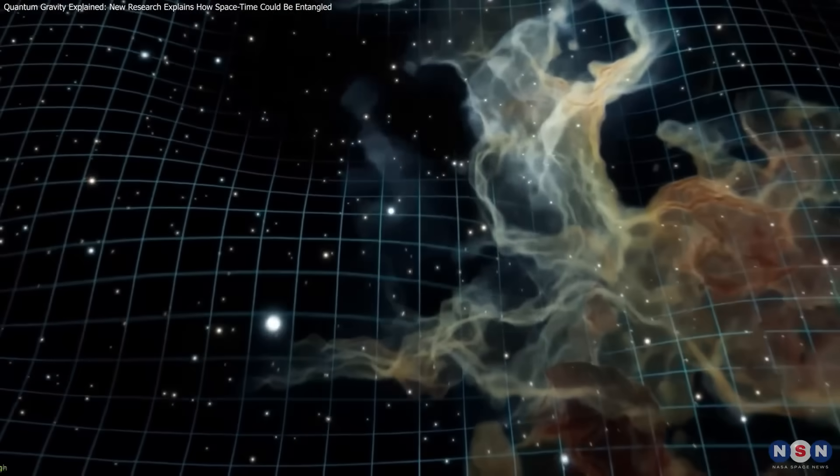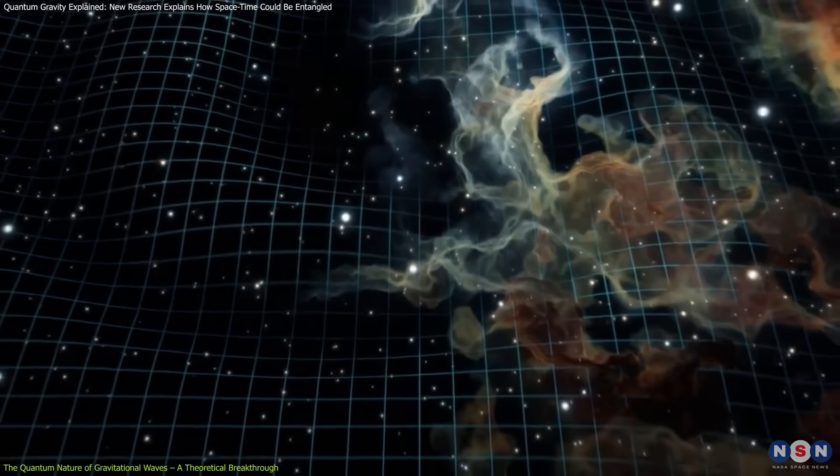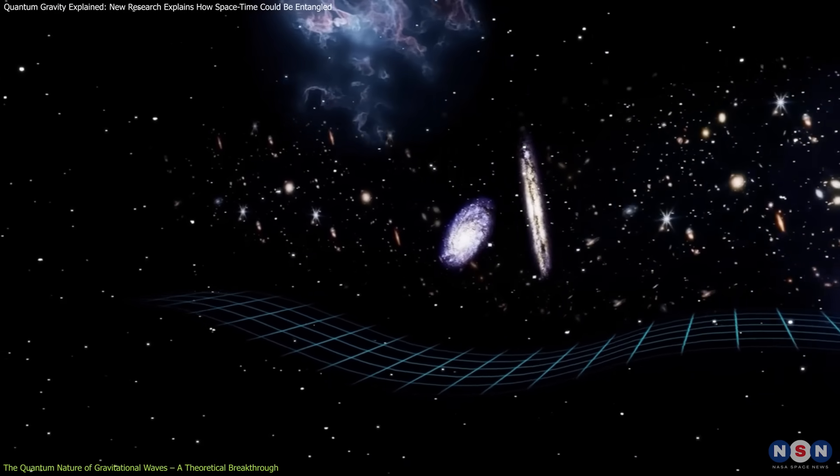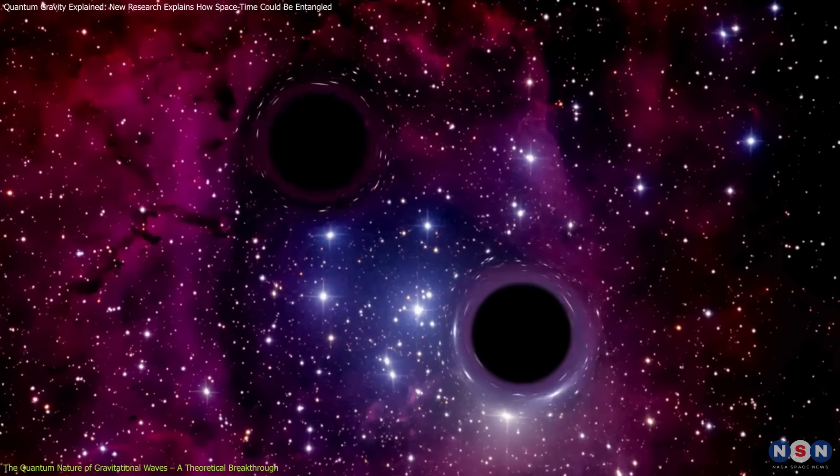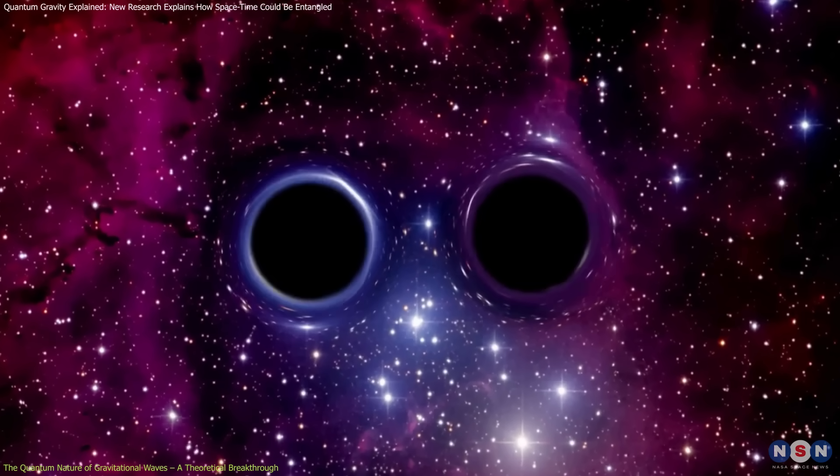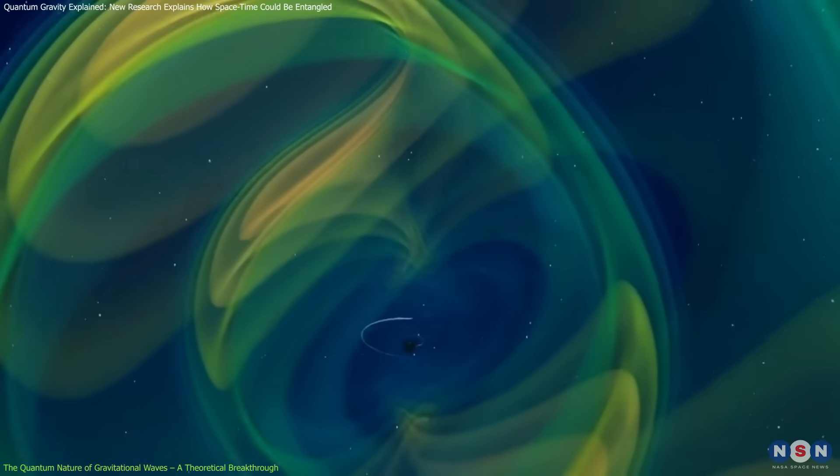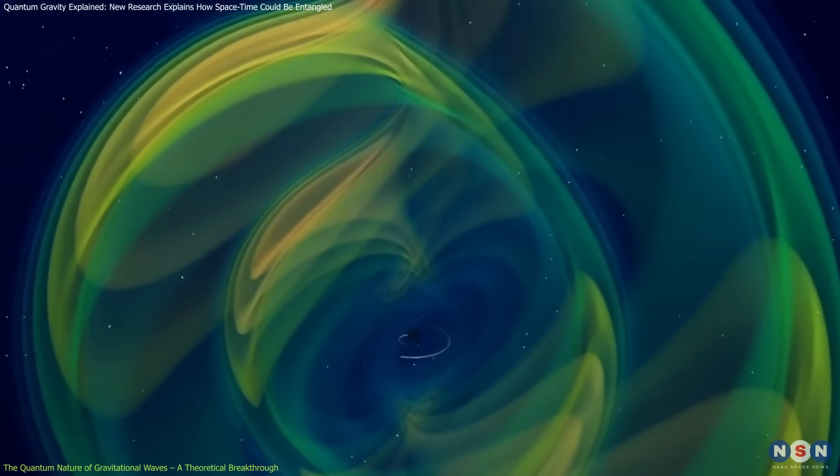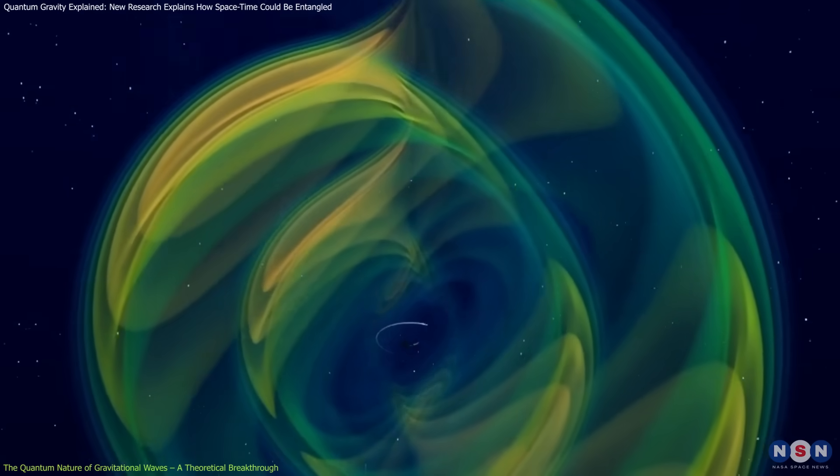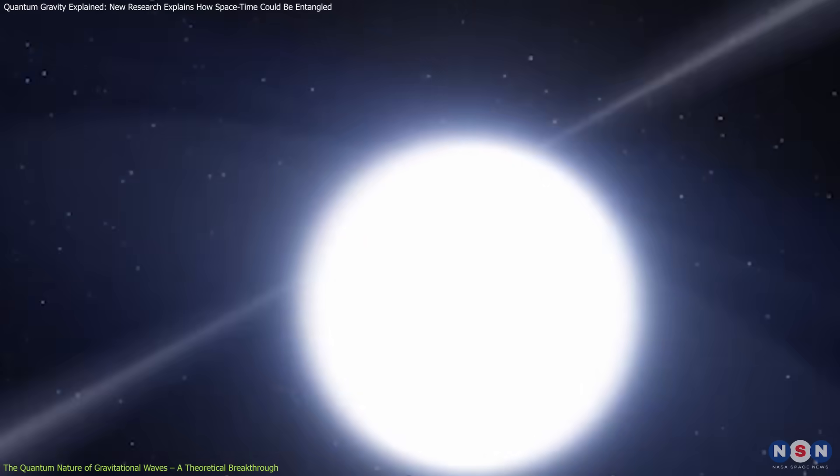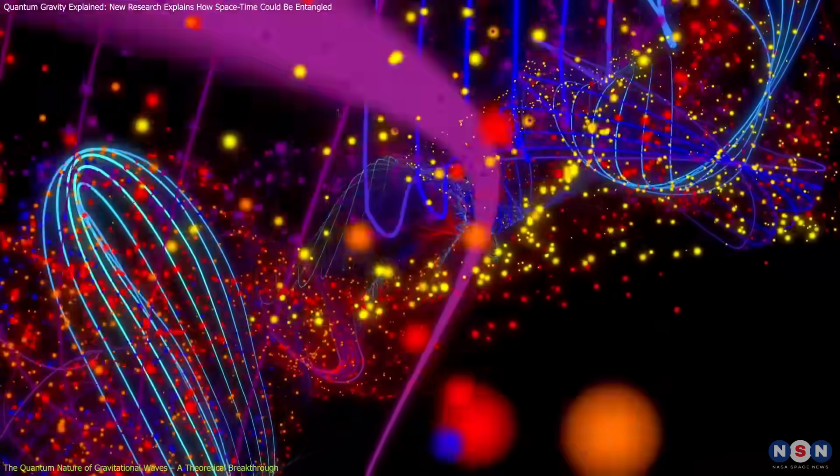Gravitational waves have long been described by Einstein's theory of general relativity as disturbances in the curvature of spacetime, propagating outward from massive, accelerating bodies like merging black holes or neutron stars. Traditionally, these waves have been treated as classical phenomena. However, recent theoretical advancements propose that gravitational waves may also possess quantum characteristics.